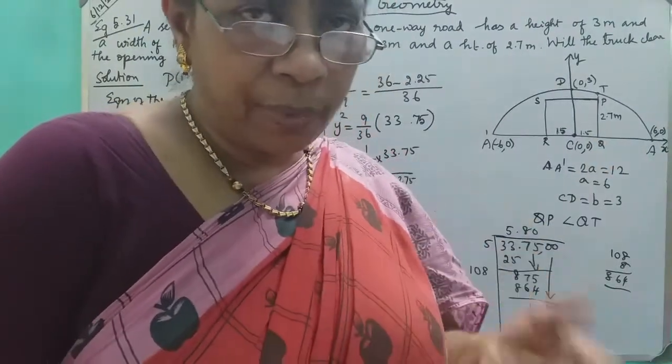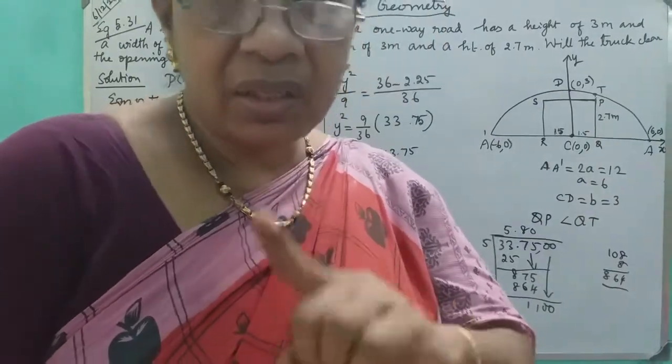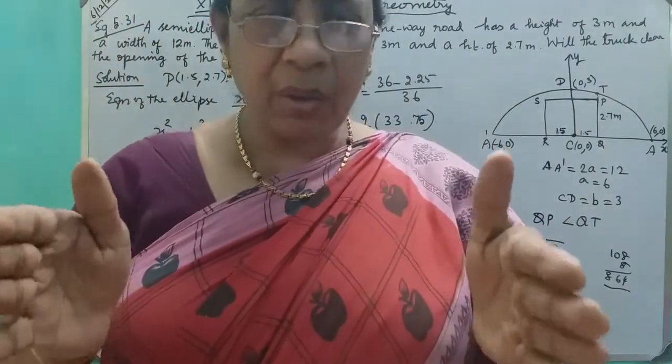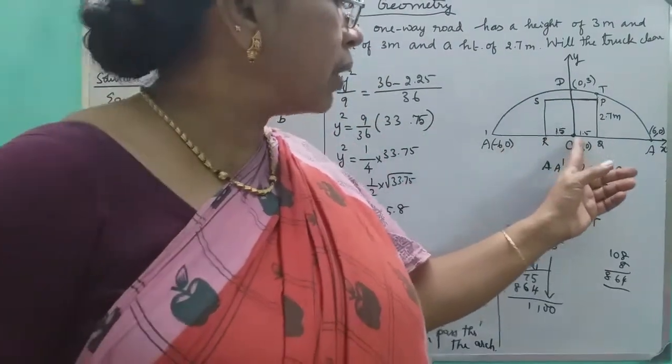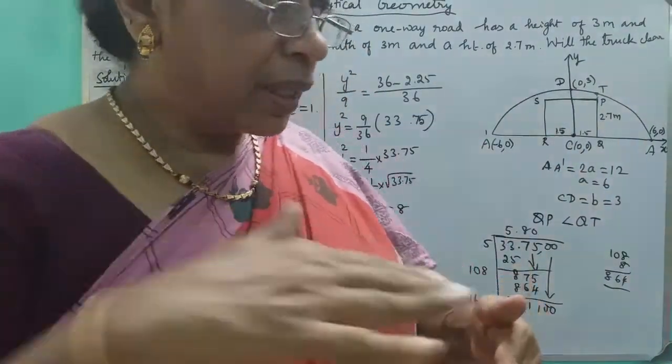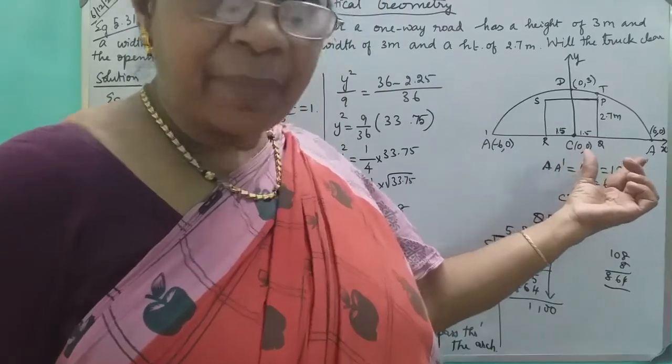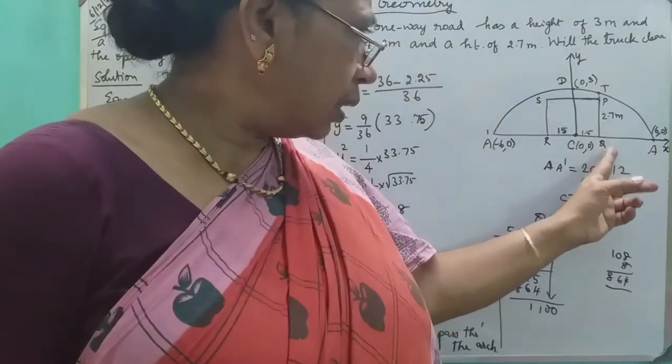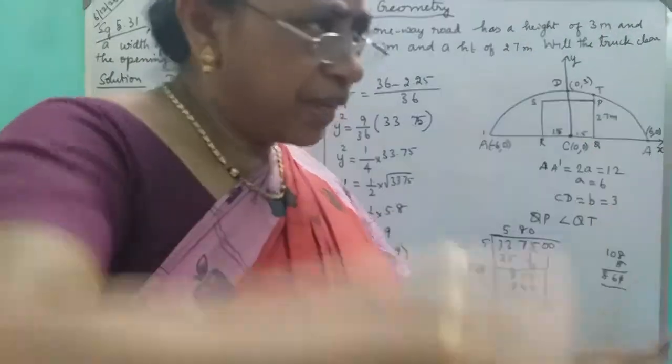Now we have a truck. The truck has a width of 3 meters. If the truck goes through the center, there will be 1.5 meters on each side. The truck has a height of 2.7 meters. When the truck goes through, we need to check this.